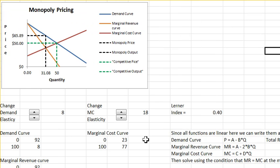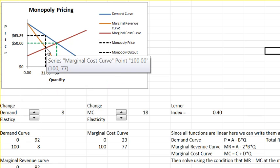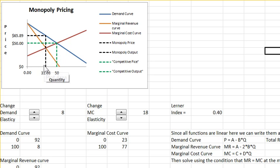Now let's take a look at the graph. Here is the marginal cost curve. This is the marginal revenue curve. It's twice as steep as the demand curve. The monopoly output is where marginal cost crosses marginal revenue. And when you have that output you go back up to the demand curve to determine the monopoly price. So the monopoly price is $65.89 at these values and the monopoly output is 31.08.